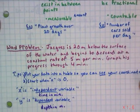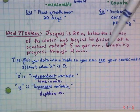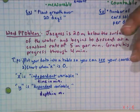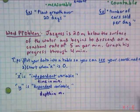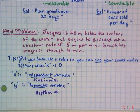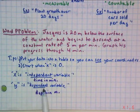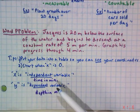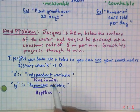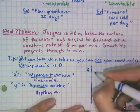Now we're going to apply this with our first word problem. Jacques is 20 meters below the surface of the water and begins to descend at a constant rate of 5 meters per minute. Graph his progress through 4 minutes. If we're graphing something, we've got to have some points. My advice is to put your data into a table so you can see your coordinates. You always start your data when x is 0. The x will always be the independent variable, and most of the time that's going to be time. Y will be the dependent variable that changes depending on what time it is.